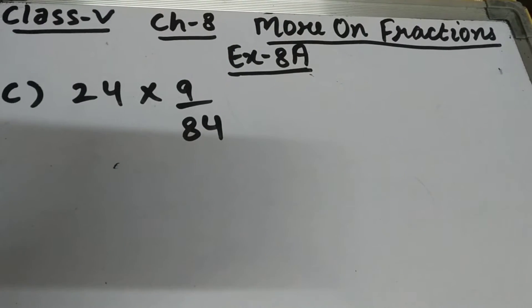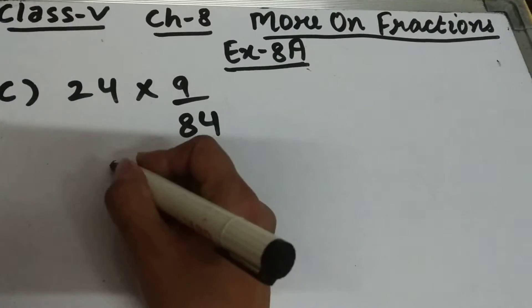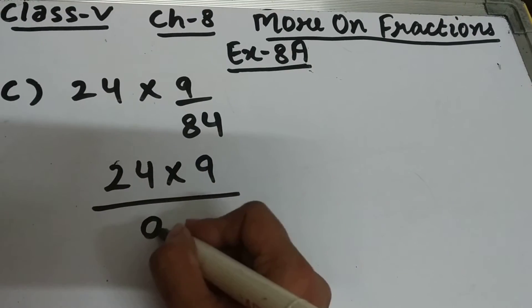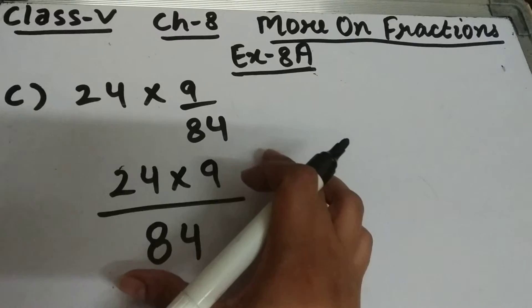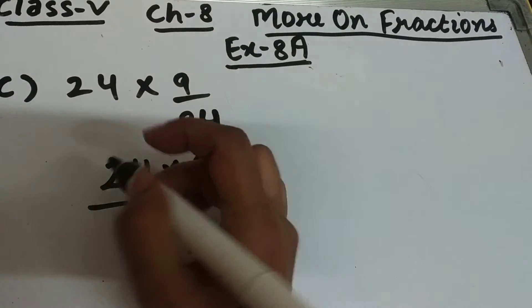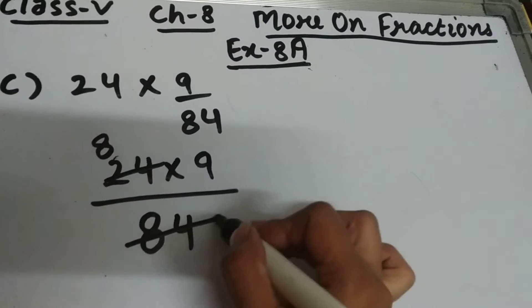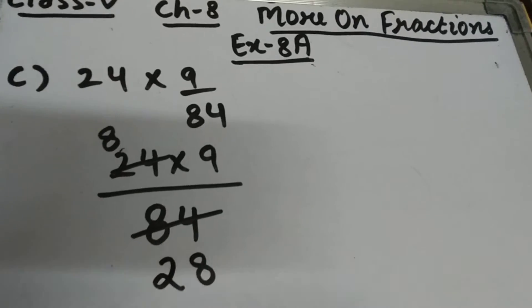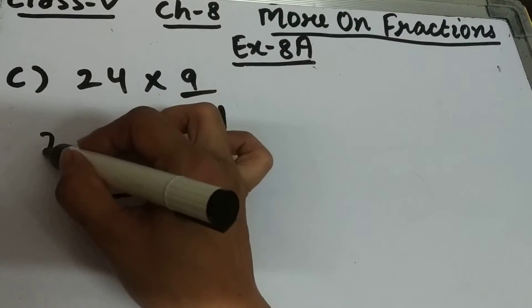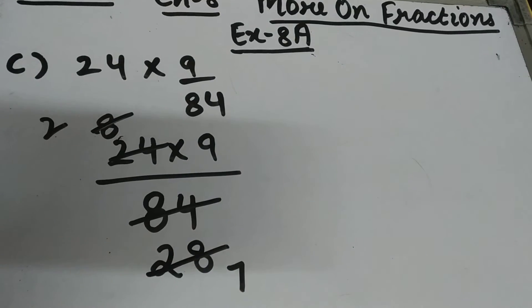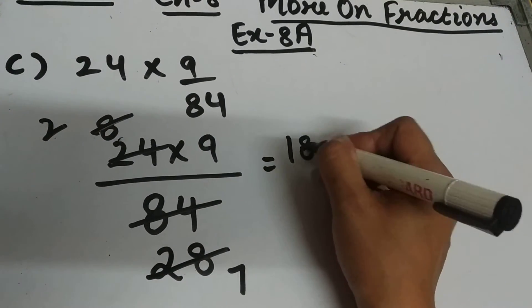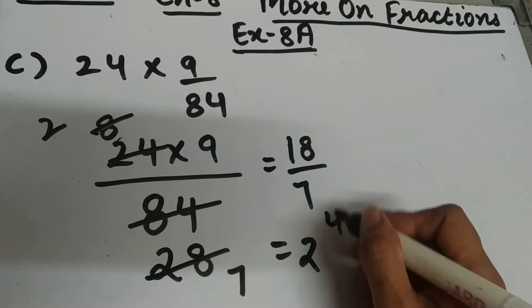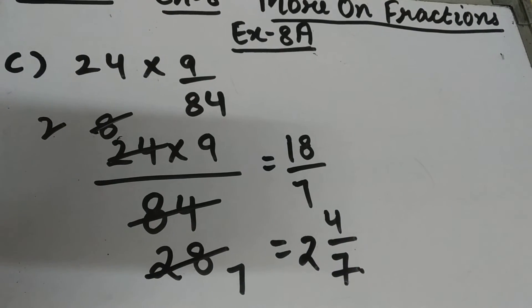Part c is 24 multiplied by 9 by 84. Multiply the whole number by the numerator of the fraction and keep the denominator as it is. Now we will reduce it. 3 eights are 24, 4 threes are 12, 2 sixes are... after that 4 twos are 8 and 4 sevens are 28. So this will be 18 upon 7. Convert it into a mixed fraction: 7 twos are 14, remainder 4, so the answer is 2 and 4 upon 7.